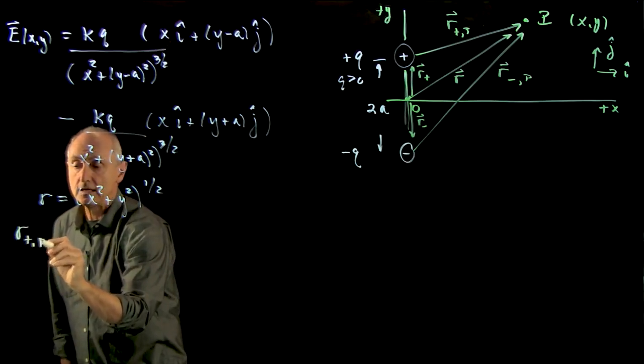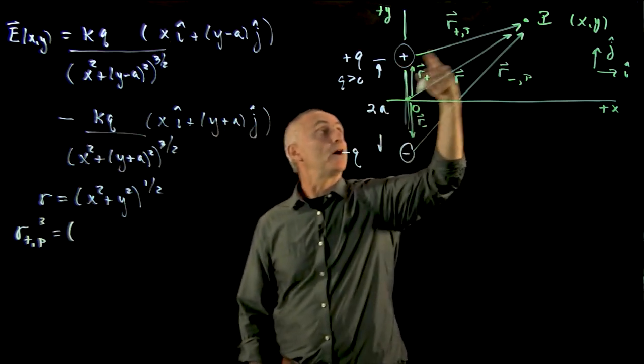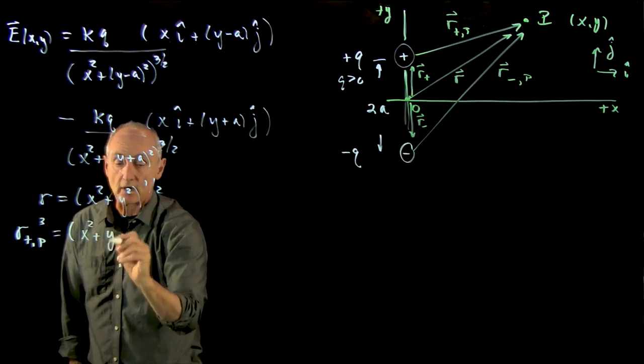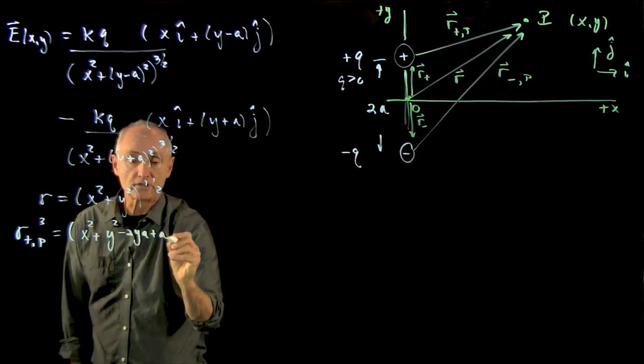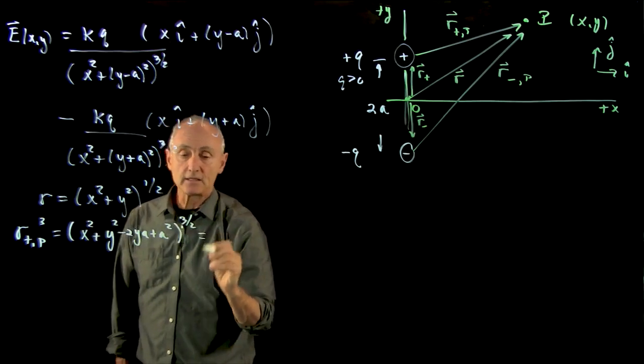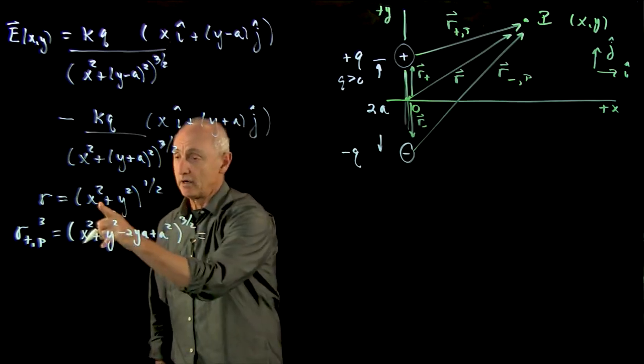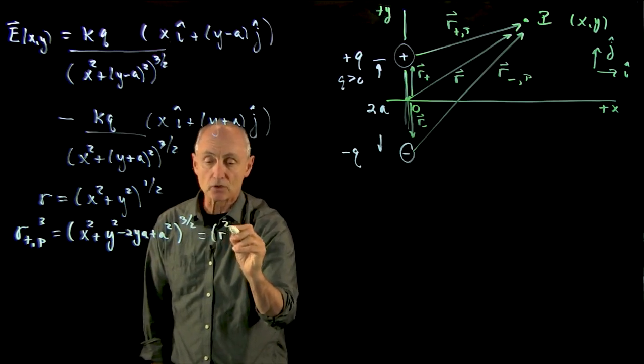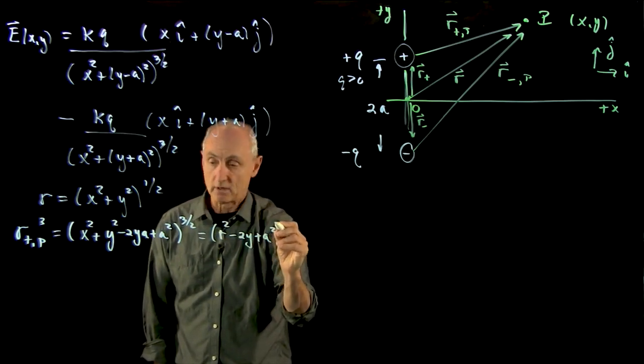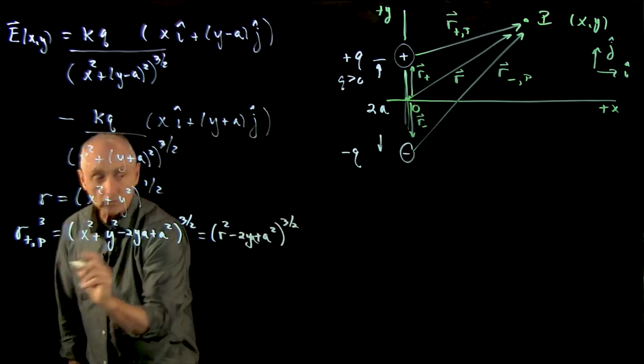We'll write r_plus_p cubed, which is equal to this quantity, which is the distance from the positive charge to p. And what I'm going to do is first expand that: x squared. Now when I expand y minus a squared, I get y squared minus 2ya plus a squared. And that's all to the 3 halves power. And I'm going to pull out the r squared in here. And when I pull out the r squared, we'll rewrite that in the following way: r squared minus 2ya plus a squared to the 3 halves.